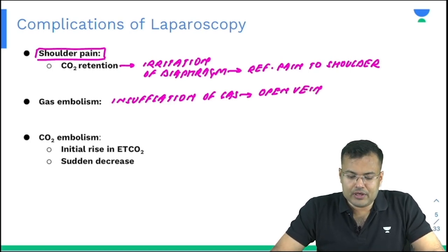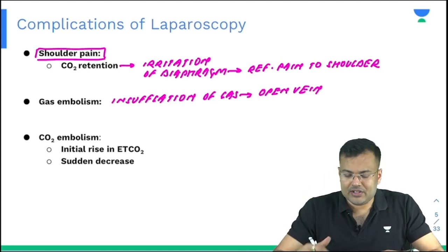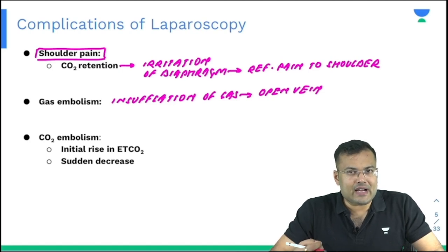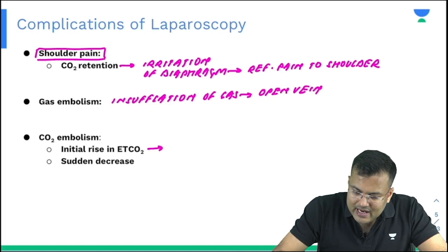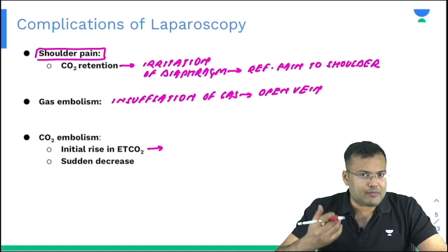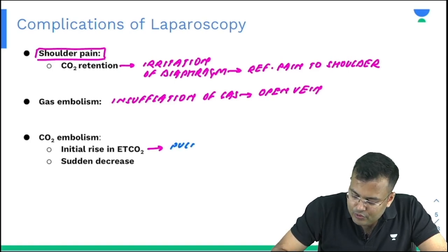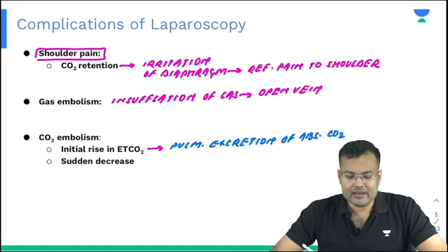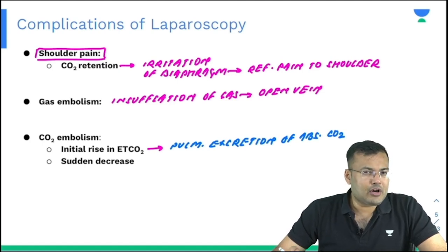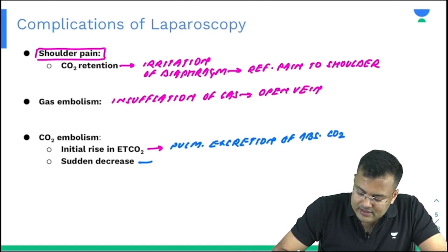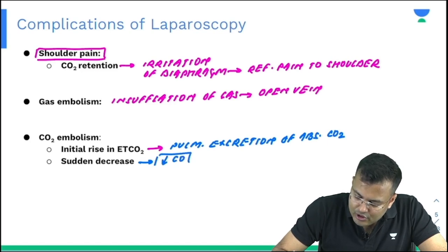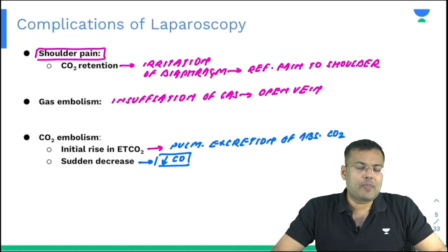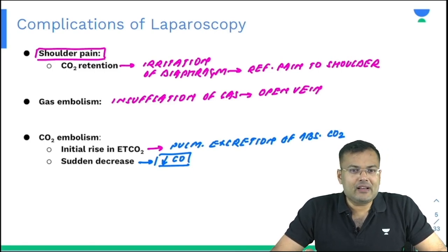The third complication is CO2 embolism. Whenever the patient is having CO2 embolism, initially there is a rise in end-tidal CO2 (ETCO2) because of pulmonary excretion of absorbed CO2. After that, there is a sudden decrease in ETCO2 because of fall in cardiac output. The hint about CO2 embolism in exam questions will be the initial rise of end-tidal CO2.